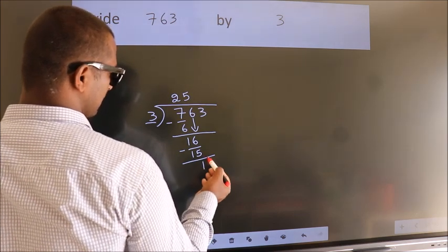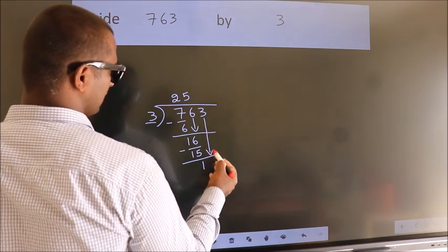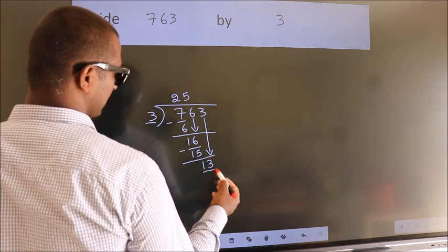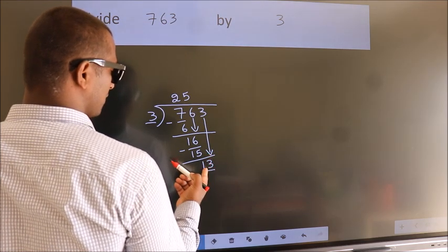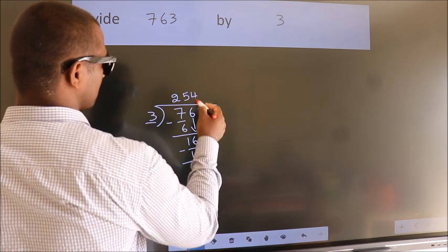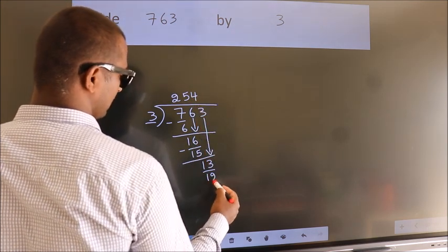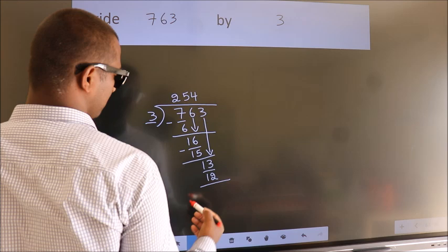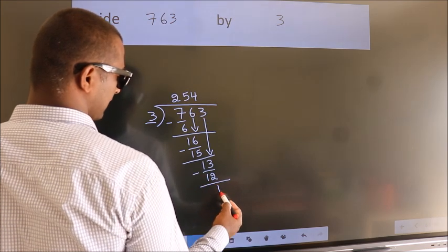After this, bring down the beside number. So, 3 down. So, 13. A number close to 13 in the 3 table is 3 times 4, which is 12. Now, we subtract. We get 1.